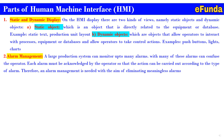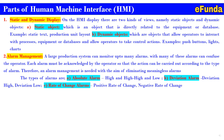Second, alarm management. A large production system can monitor up to many alarms, and with many alarms it can confuse the operator. So each alarm must be acknowledged by the operator so that the action can be carried out according to the type of alarm. Therefore, an alarm management is needed with the aim of eliminating meaningless alarms. The types of alarms are: A. Absolute alarm — high, high high, and low. B. Deviation alarm — deviation high and deviation low. C. Rate of change alarm — positive rate of change or negative rate of change.